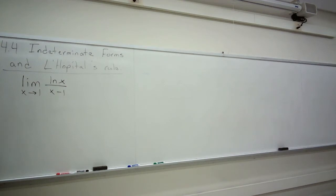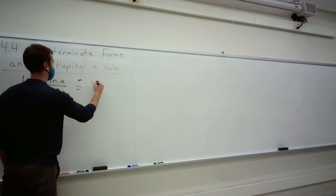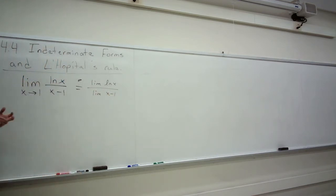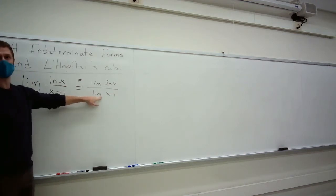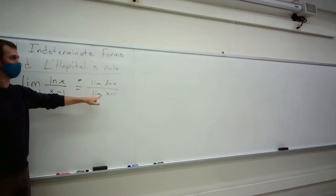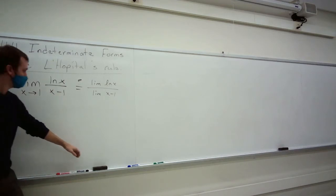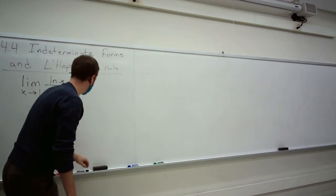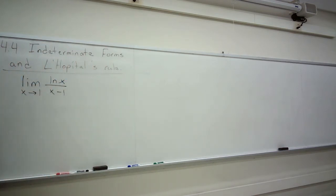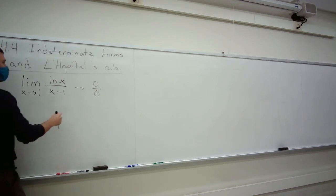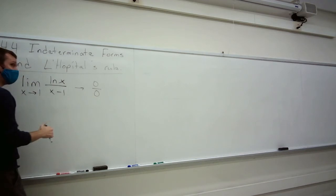Going way back, we remember to take the limit of a quotient we might just take the quotient of the limits — if certain conditions are met. One of those conditions is that the denominator's limit can't be zero. So limit laws cannot be applied in indeterminate forms such as this. We call this kind of indeterminate form — where evaluating would essentially become zero over zero — an indeterminate form.